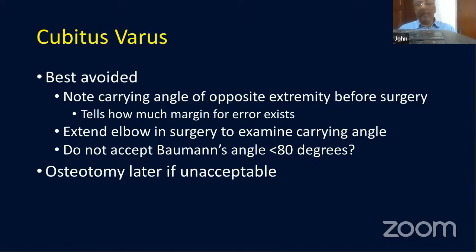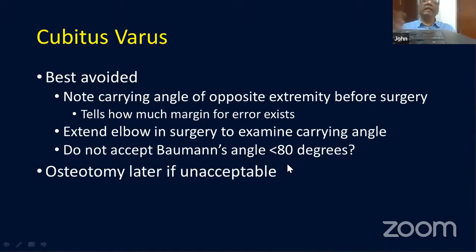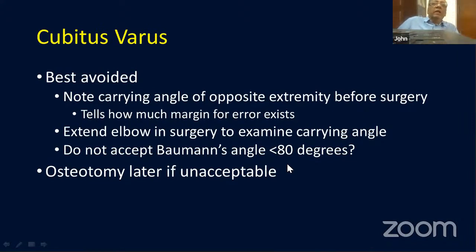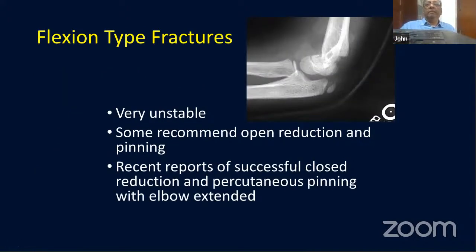Baumann's angle is assessed — some describe it as 10 degrees and some as 80 degrees depending on convention. If the angle is beyond the normal range, do not accept it or you will need an osteotomy later. Regarding the flexion-type variant: in this fracture the distal fragment is displaced anteriorly.